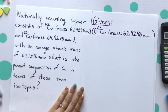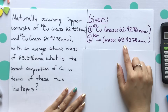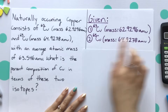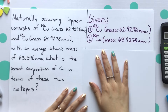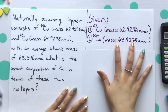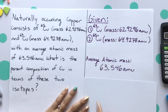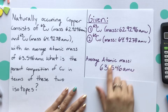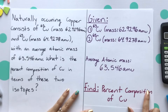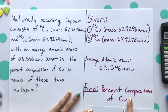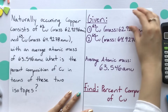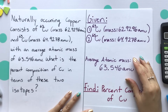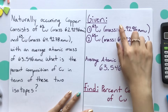Our givens are the two different types of isotopes, so we're really just focusing on our exact masses. This is just the proper notation they typically use, but as mentioned, we're focusing on these masses. We're also given the average atomic mass of 63.546 AMU, and we're asked to find the percent composition of copper — meaning how much of each isotope, as a percentage, makes up that atomic mass. So we're really looking for two different percentages for our two different isotopes.